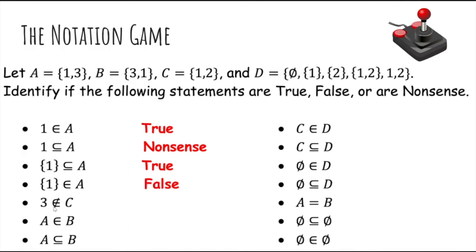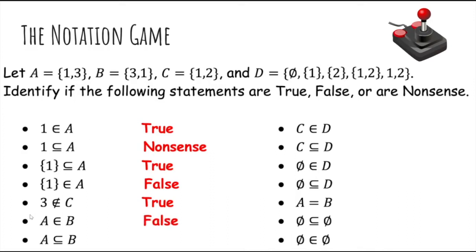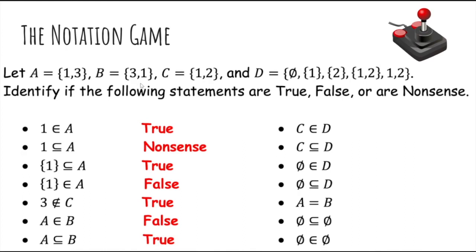What about three is not an element of C? You can check that three is not present inside C, so this statement is true. What about A is an element of B? A is a set, and B does not contain any sets as elements, so this is false. What about A is a subset of B? Every element inside A is also present in B, so this is true. What about C is an element of D? C is exactly present as an element of D right here, so C is indeed an element of D. What about C is a subset of D? Every element in C is inside D — you can see one here and two here — so C is also a subset of D. That's unusual.